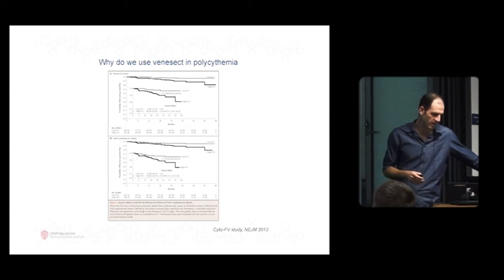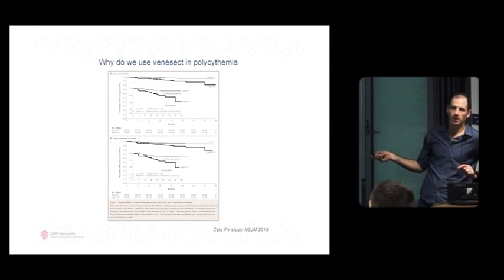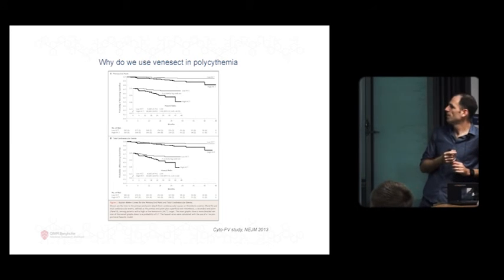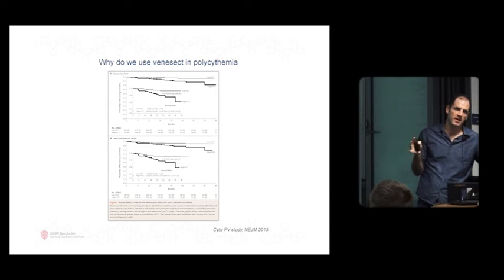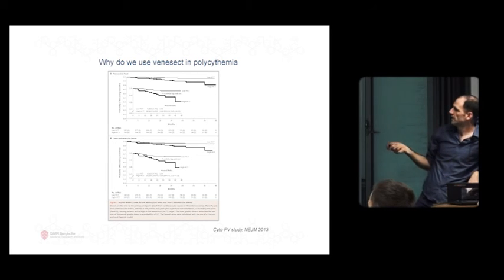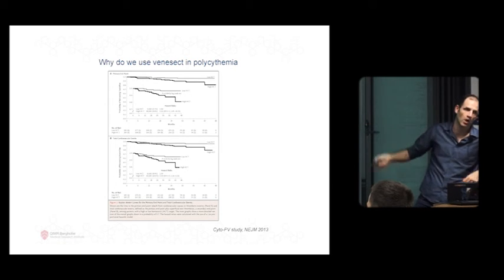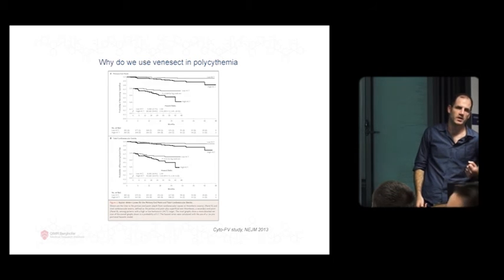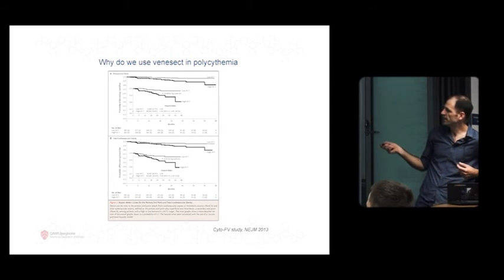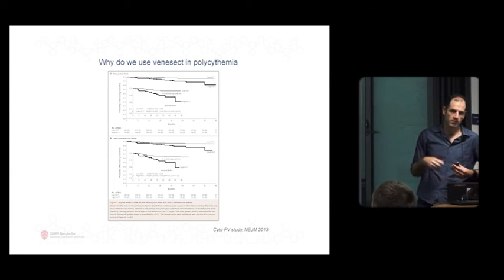Why do we venesect in polycythemia? It's based on this one big study. They took patients with polycythemia and said you have to be kept with a hematocrit at less than 45%, and everybody else can go 45% to 50%. This is the low group and the high group. This is cardiac events and cardiac plus mortality - it's a survival curve. You can see that those patients who are maintained with a low hematocrit, so regular venesections and really controlled closely, survive better and are much less likely to have a heart attack or stroke. Based on this study is why we venesect patients and make sure we're very careful about keeping that in control.